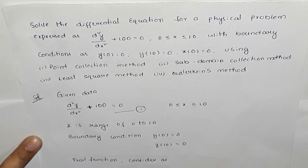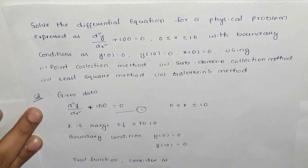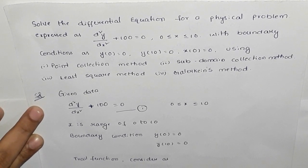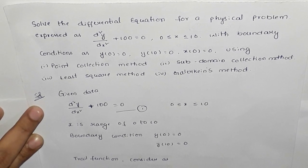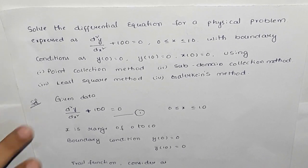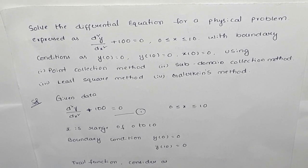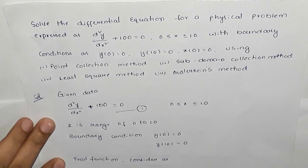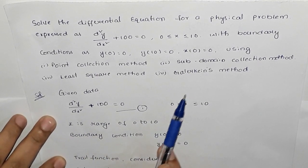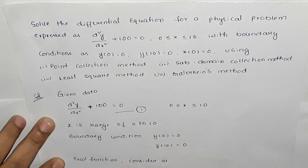Hi friends, welcome back to our channel. This video is on the Weighted Residual Method. The weighted residual method is employed to obtain approximate solutions to linear and non-linear problems. We have four types of methods: point collocation method, subdomain collocation method, least square method, and Galerkin's method. We will solve a problem using each of these methods in this video.